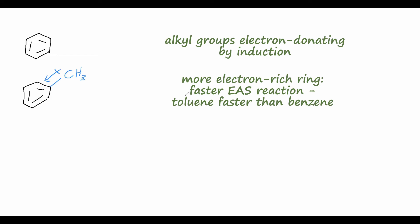We say that the substituent on the ring — in this case an alkyl group — is electron donating, so it is activating towards EAS reactions by induction. What if we look at another very common substituent: oxygen? We can draw the simplest compound, which is phenol, where we have an OH group on the benzene ring.